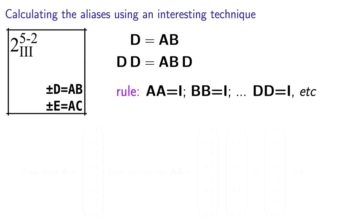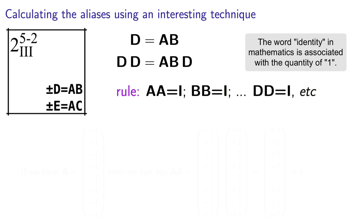Any time you see two of the same letters side by side, you can instantly eliminate it and replace it with the letter capital I. This I corresponds to the intercept, or another way of seeing it is the identity, the number 1.